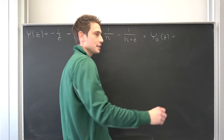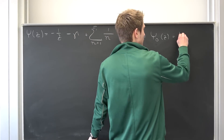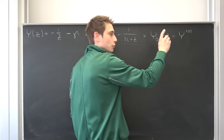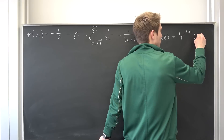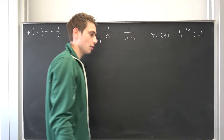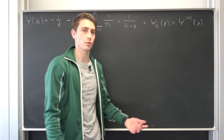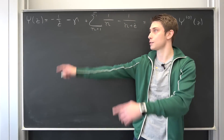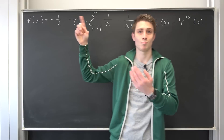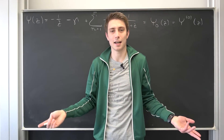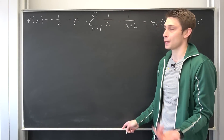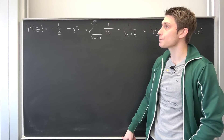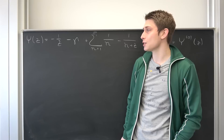The zeroth polygamma function is the same as the digamma function, but it's the zeroth derivative with respect to z. In order for us to get the polygamma functions, what we want to do is differentiate the digamma function n times. So this is something we are going to do today. Let's dive right in.